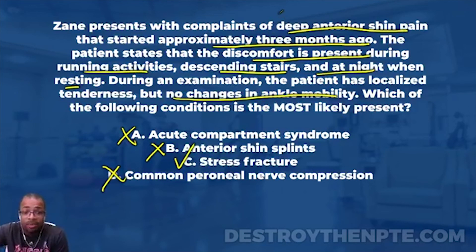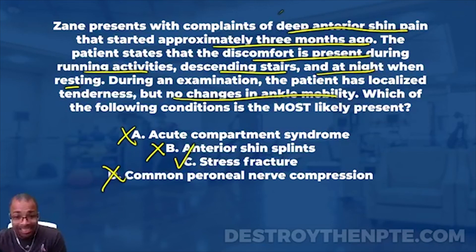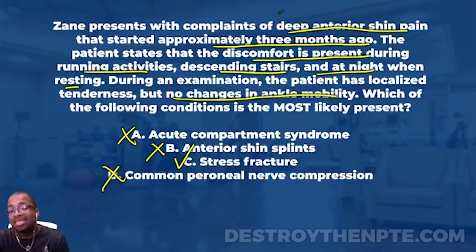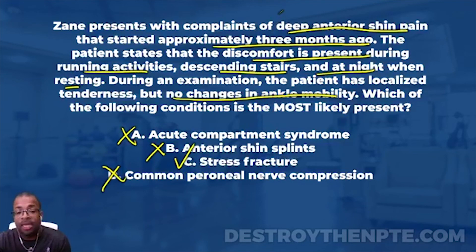Eliminating D leaves us with our final answer: stress fracture - one hundred percent. It fits the clinical picture. Deep shin pain that starts gradually after repetitive loading with running or jumping, pain at night even at rest, no changes in mobility, and localized tenderness. Here's how I differentiate shin splints from a stress fracture: shin splints will have diffuse pain greater than five centimeters in length; a stress fracture will have localized pain less than five centimeters in length. That's something you need to know for the exam.